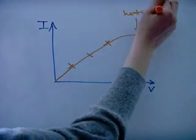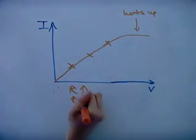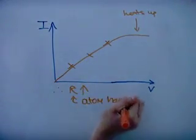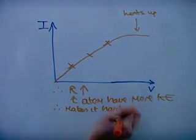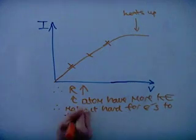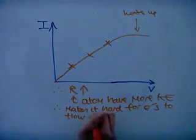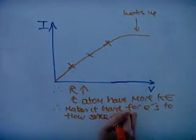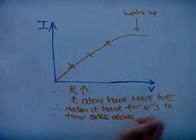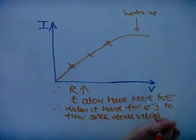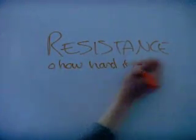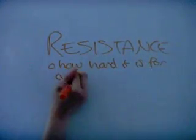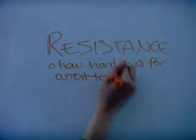If we left the wire to heat up, the current would no longer be proportional to the voltage. This is because the atoms impede the flow of electrons, therefore increasing the resistance. Resistance is how hard it is for current to flow in a material.